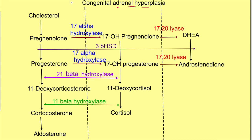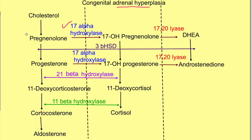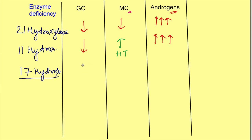The third enzyme deficiency is deficiency of 17-alpha hydroxylase. If this enzyme is deficient, it will not affect the mineralocorticoid pathway, which will proceed unimpeded, leading to increased synthesis of aldosterone as the entire pregnenolone is used for aldosterone synthesis. However, the glucocorticoid and androgen pathways will be affected because the precursors cannot proceed in those directions. So we see decreased glucocorticoids, increased mineralocorticoids, and decreased androgens.